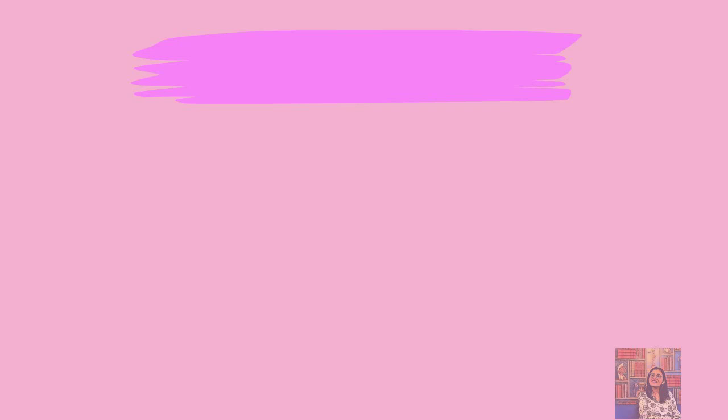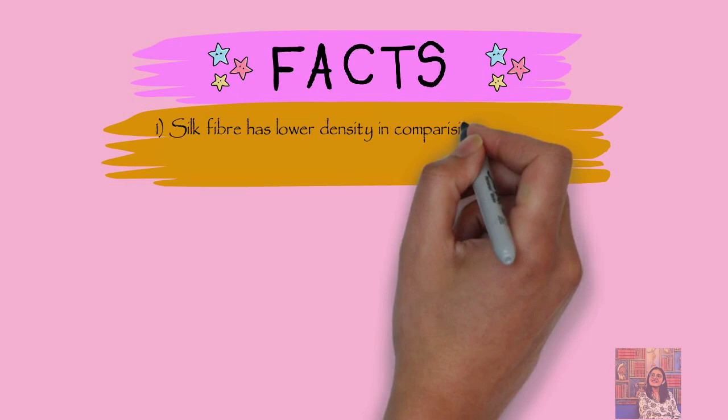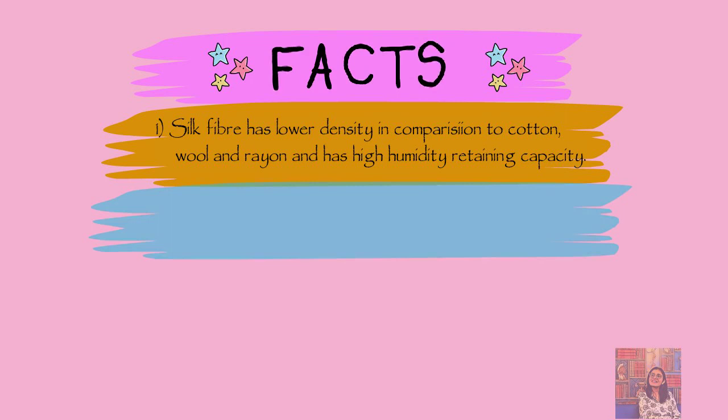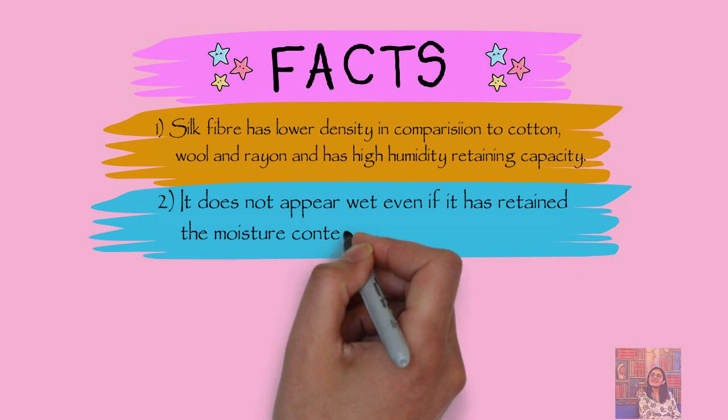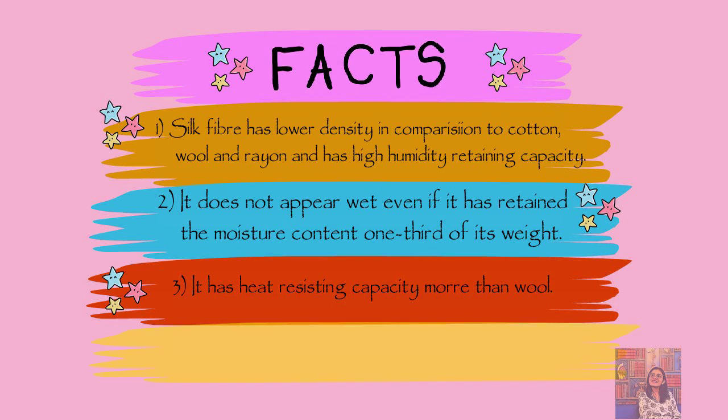First, silk fiber has lower density in comparison to cotton, wool, and rayon, and has high humidity-retaining capacity. Second, it does not appear wet even when it has retained moisture content up to one third of its weight. Third, it has heat-resisting capacity more than wool. And fourth, it does not decompose up to 170 degrees Celsius. That is why silk is so costly, in such demand, and this is how silk is produced in the silk gland of a caterpillar.